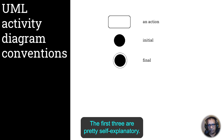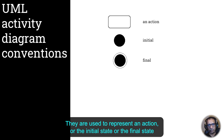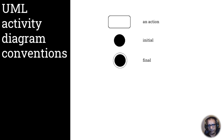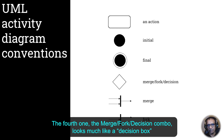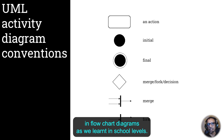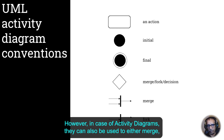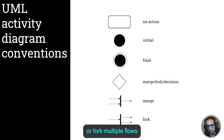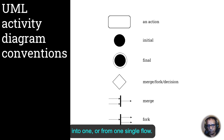The first three symbols are pretty self-explanatory. They are used to represent an action, the initial state, or the final state of the business activity. The fourth one, the merge/fork/decision combo, looks much like a decision box in flowchart diagrams as we learnt in school. However, in activity diagrams they can also be used to either merge or fork multiple flows into one, or from one single flow.